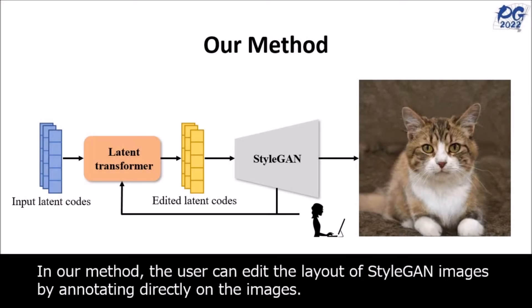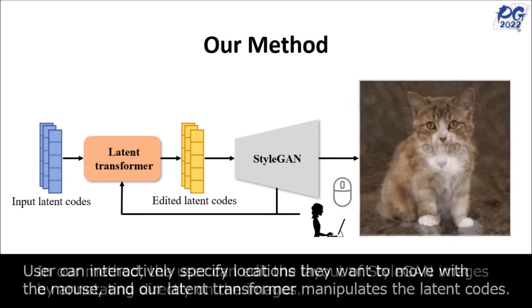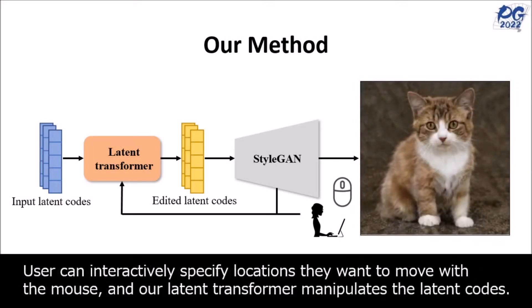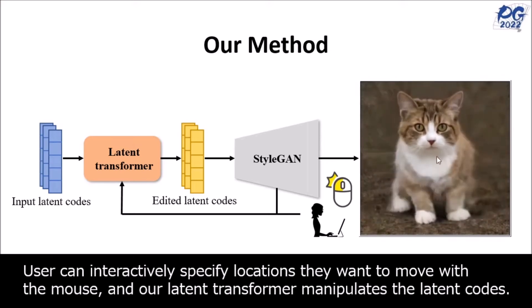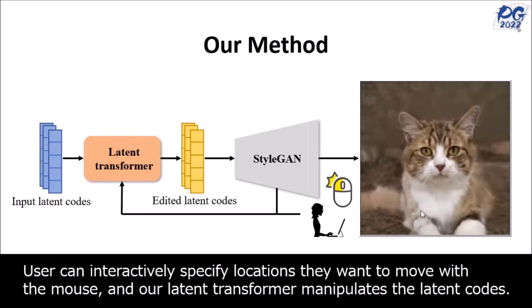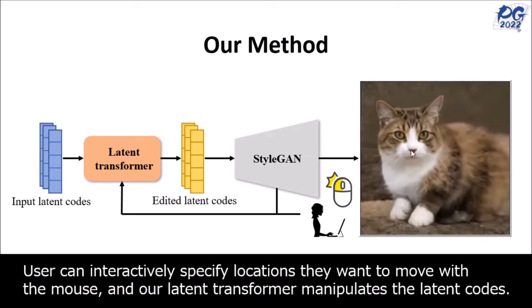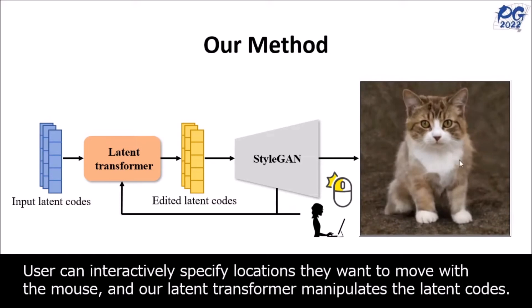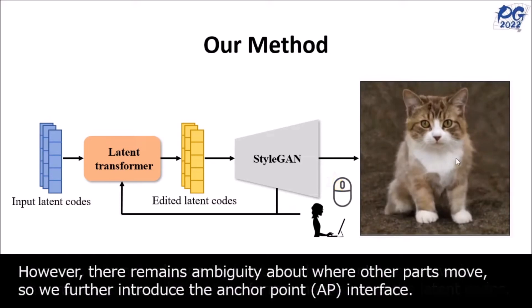Hey, what is up guys, welcome back to another YouTube video at the World of AI. In today's video I'm going to be showcasing another project that is similar to DrawGAN, but in this case you're styling an image using StyleGAN. This project is called User Controllable LT, where LT stands for Latent Transformer.